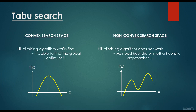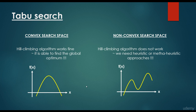Hill climbing works fine in convex search spaces — if we want to find the maximum of a function and start from a point, we go along the gradient and find the global maximum. For non-convex search spaces, hill climbing is not going to work fine; we need heuristic or meta-heuristic approaches. Brute force search could be used but is very slow. Hill climbing converges to the local maxima and does not visit the global maxima because it is a gradient exploitation method.